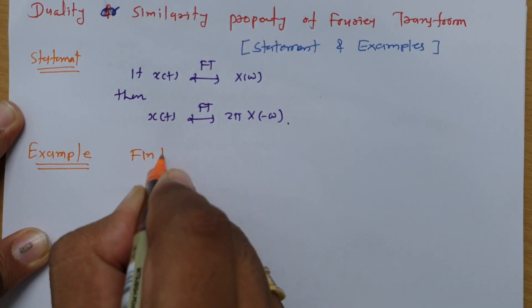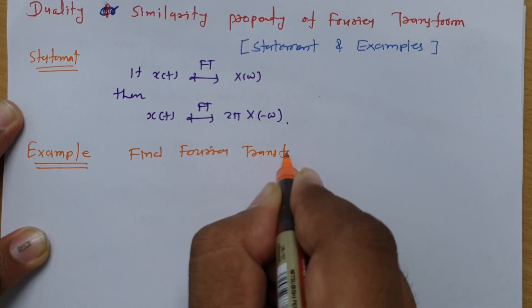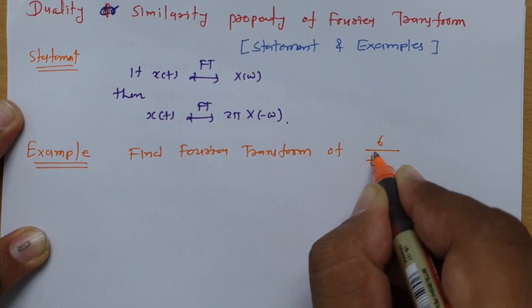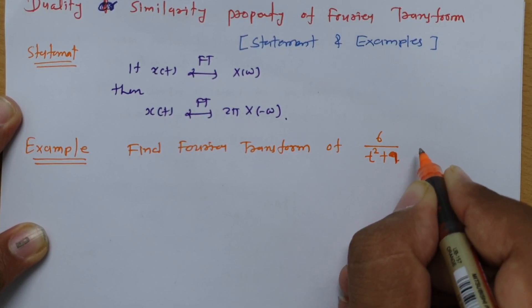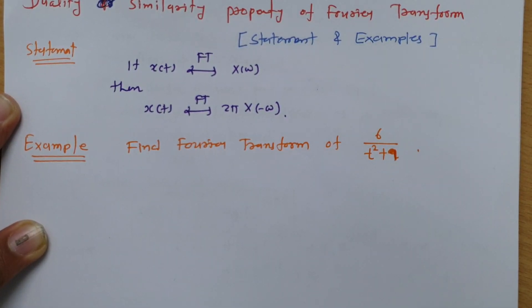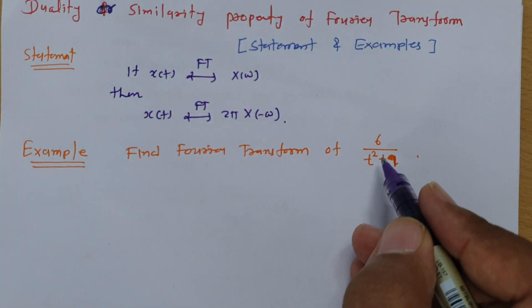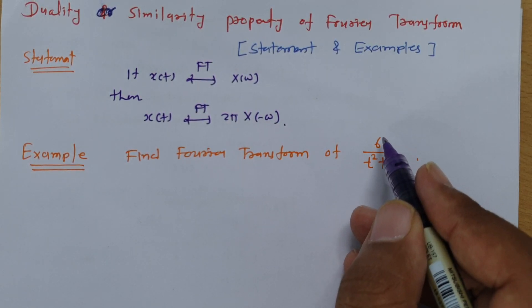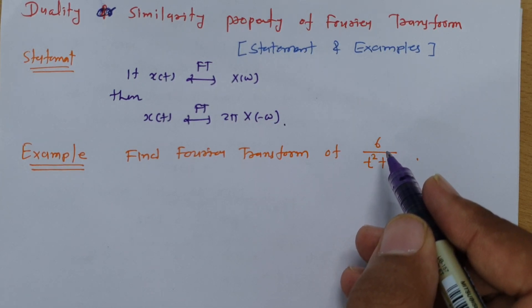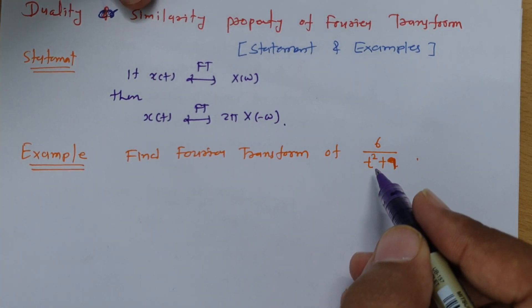Example 1: find the Fourier transform of 6 divided by (t² + 9). When you read this question you will find that we don't know any formula to have the Fourier transform of this, and even if you do it by integration you will find it is extremely difficult. So one should not go for integration in this type of problem.